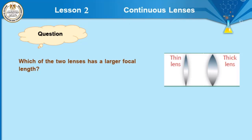Which of the two lenses has a larger focal length? The thin lens has a larger focal length. Due to decreasing convexity, the focus becomes further from the optical center of the lens, so the focal length becomes greater than that of the thick lens.